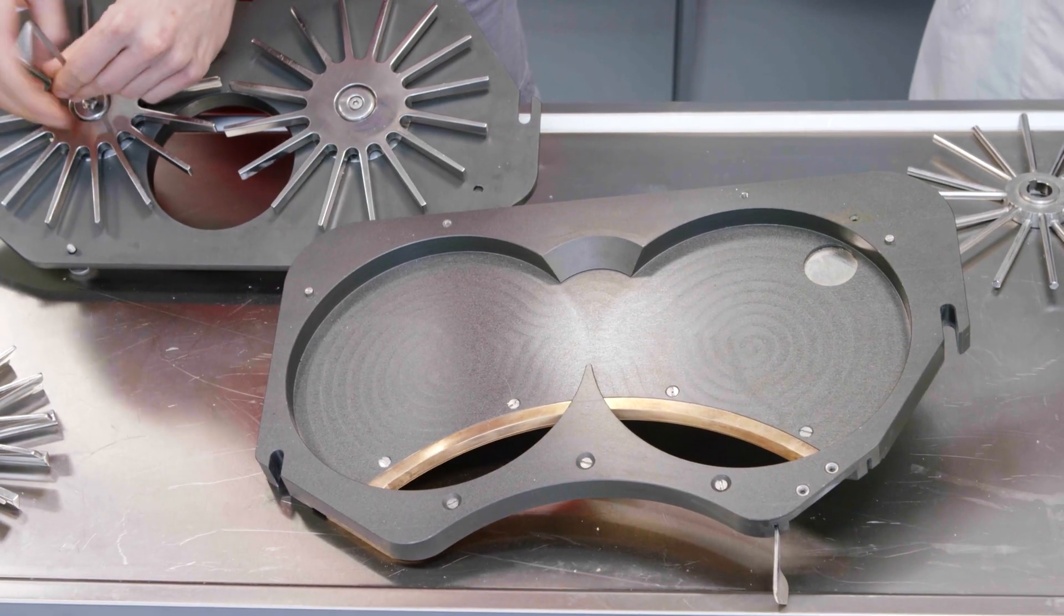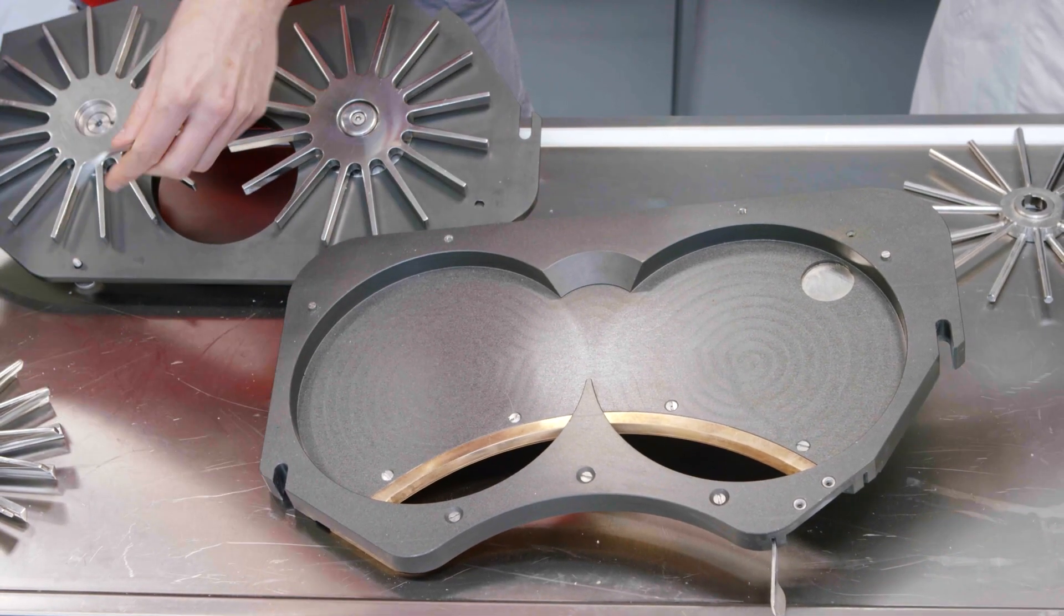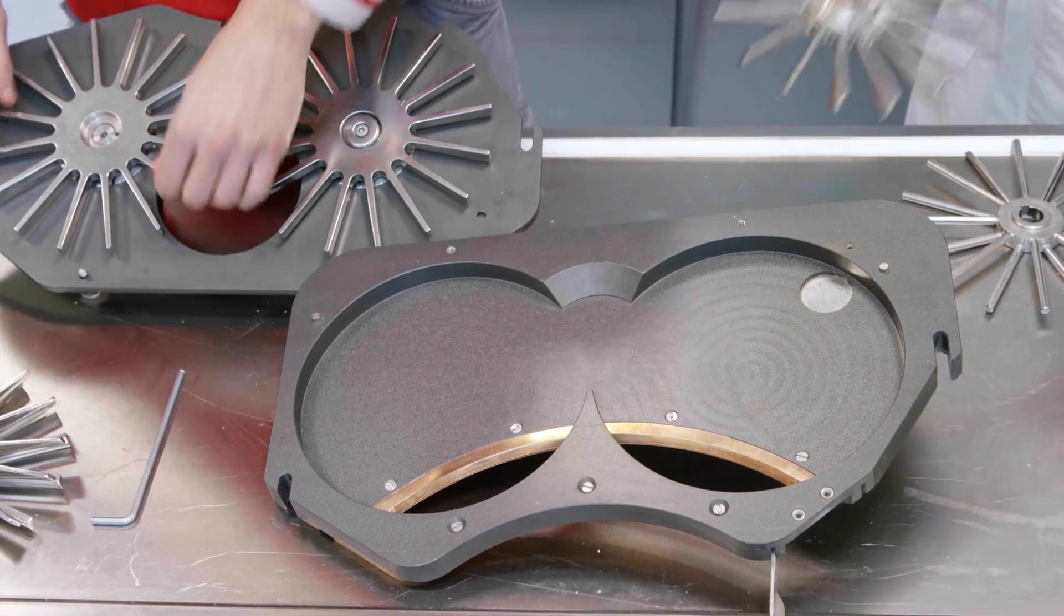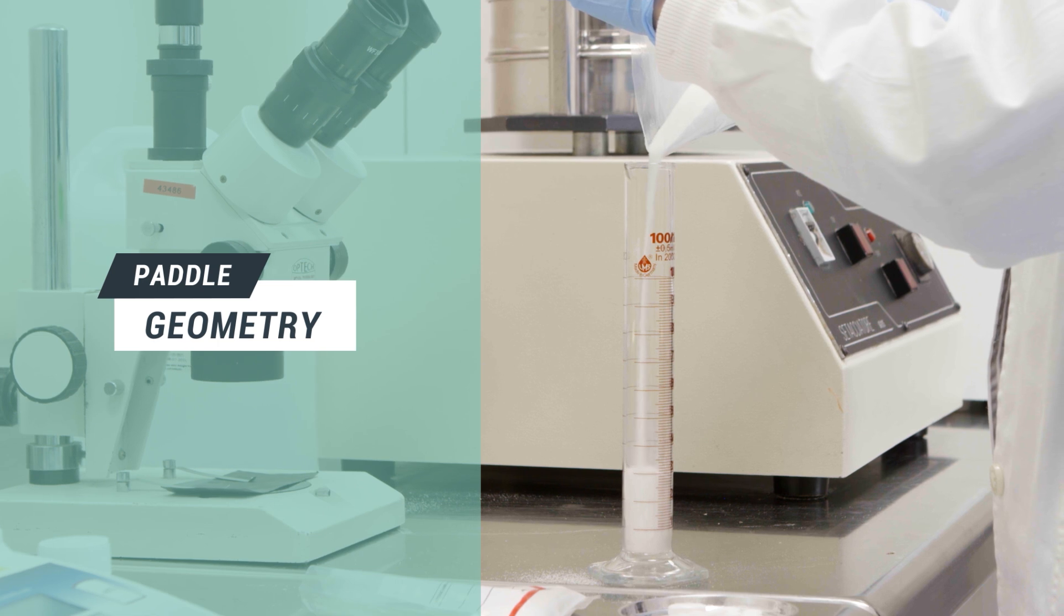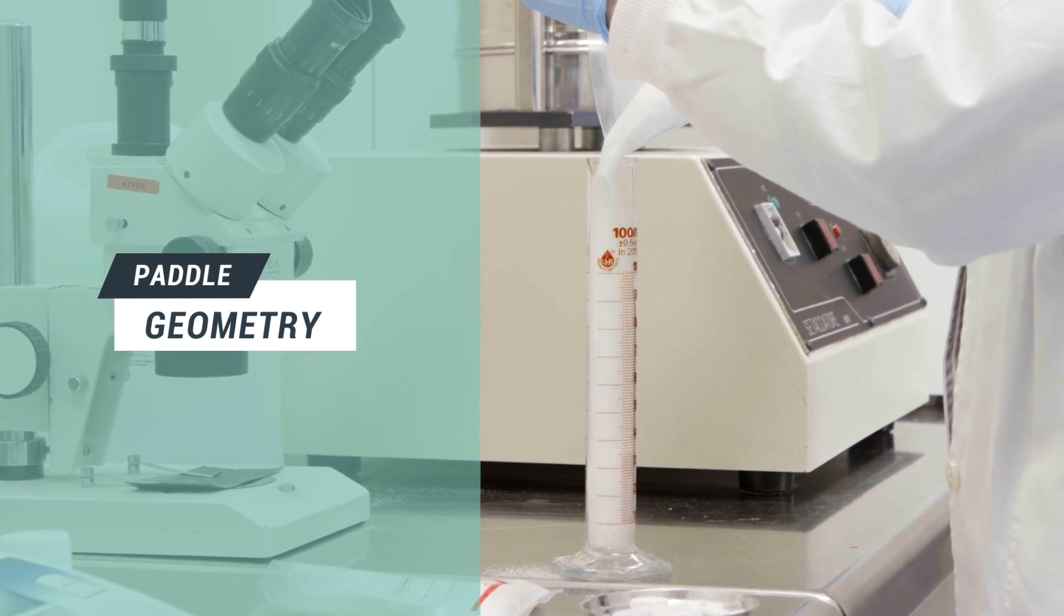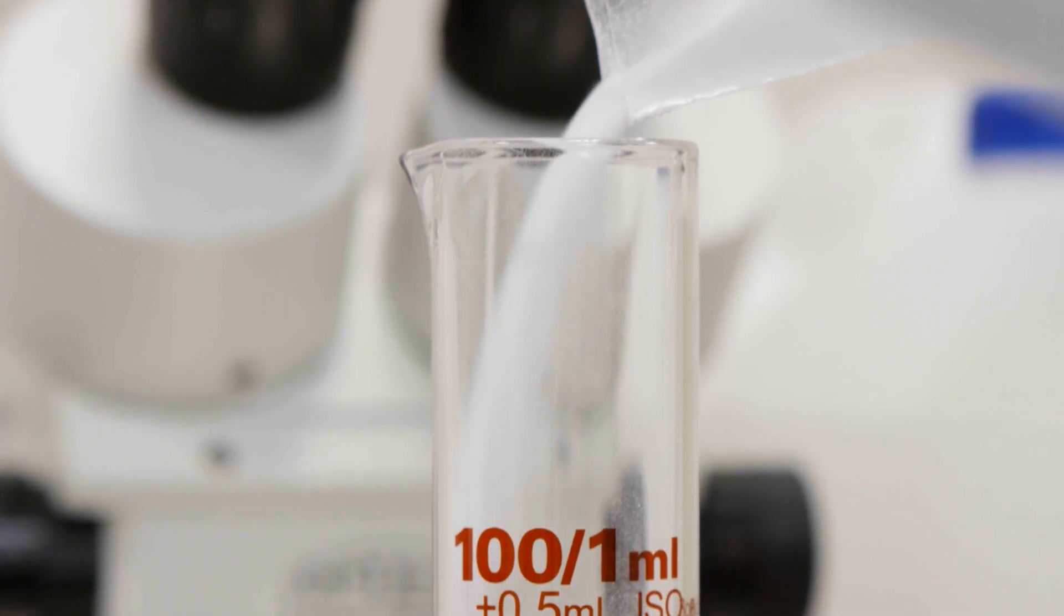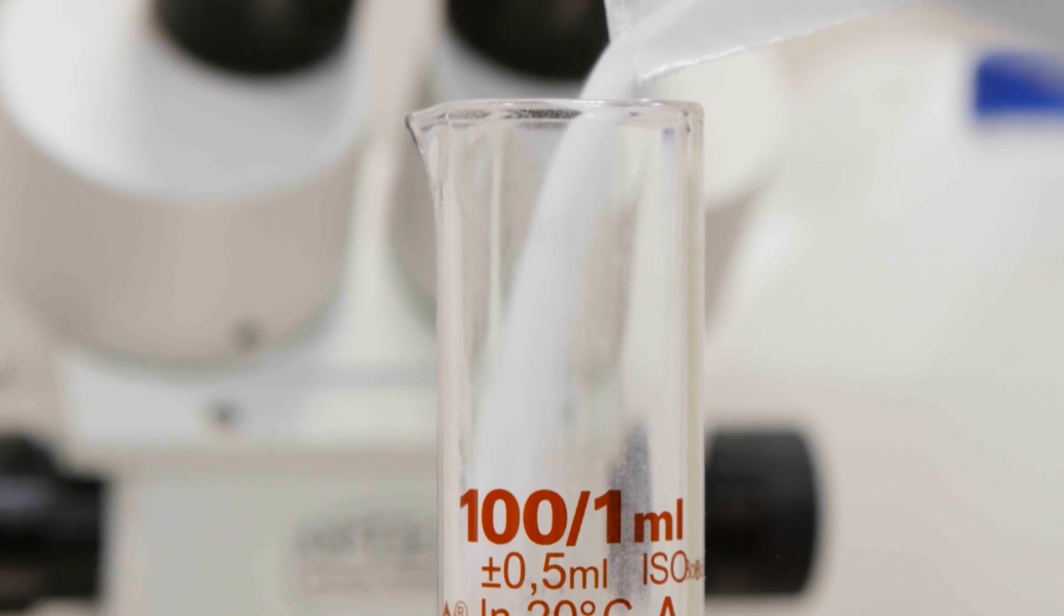Choosing the right paddle shape is therefore important. For example, with a lactose monohydrate based powder with very poor flowability, I succeeded in reducing a relative standard deviation on tablet weight from 1.5 percent to 0.3 percent simply by changing the paddle geometry.